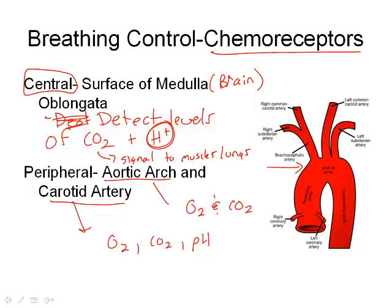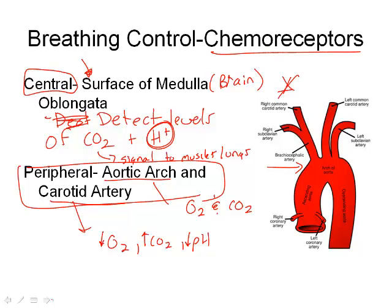The main thing is that this peripheral kind of takes a backseat to the central. The major detection is the medulla oblongata — so if there is a shortage detected at the medulla oblongata, that's going to be able to bypass anything else. So this is the big one. When we have increases of CO2, a decrease in pH, or a decrease in O2, that's when these things are going to kick in and tell our lungs to start the breathing mechanism more quickly.